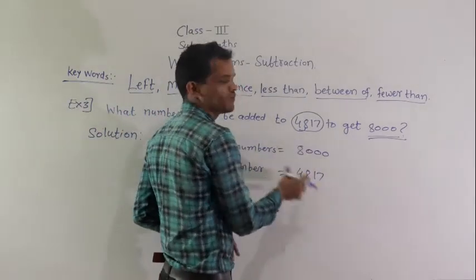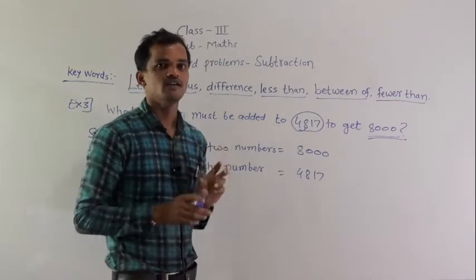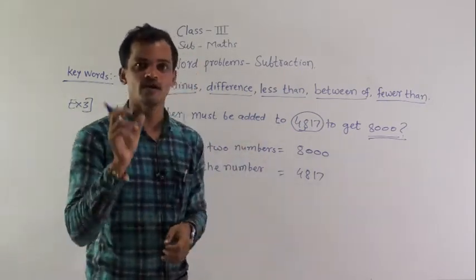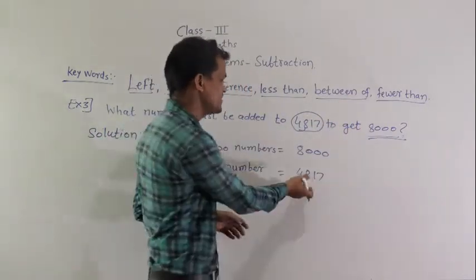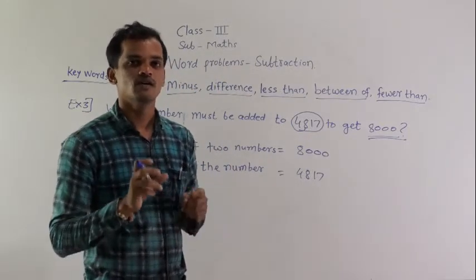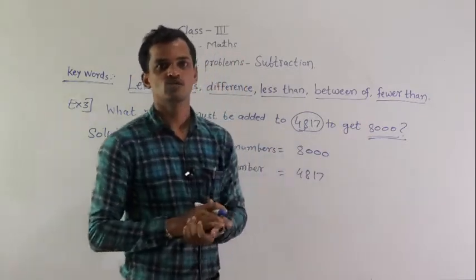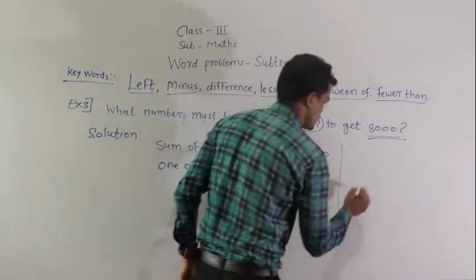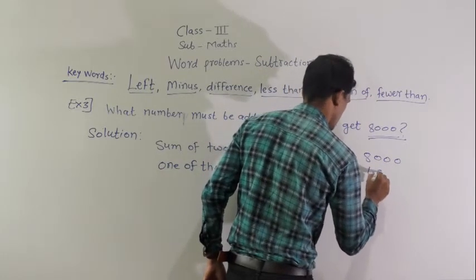To find the answer, subtract 4817 from 8000. An important reminder: while writing the solution, always write the bigger number on top and the smaller number below, otherwise you will get confused. So write: 8000 minus 4817.